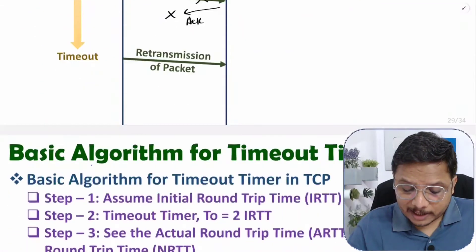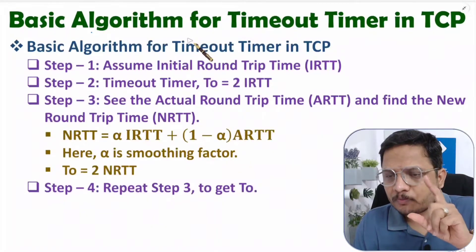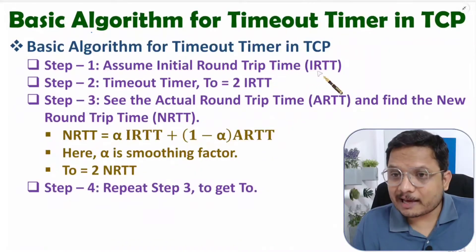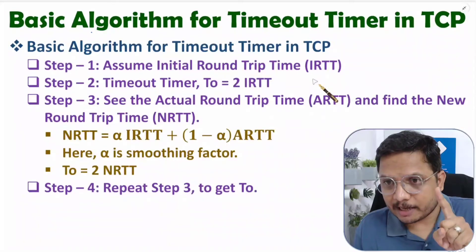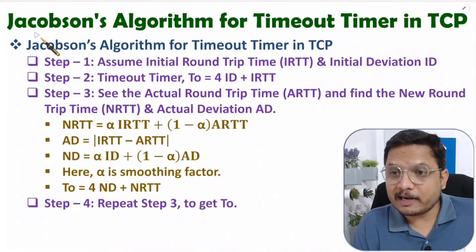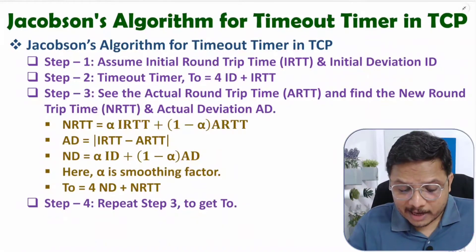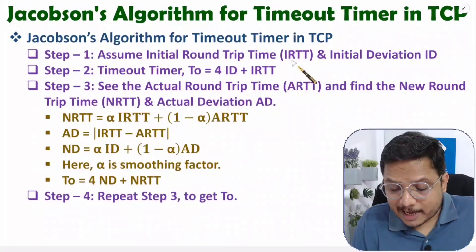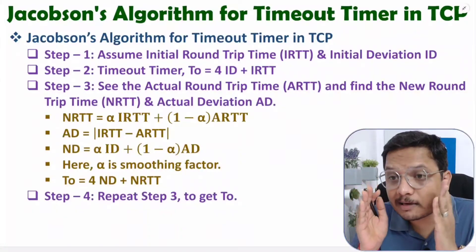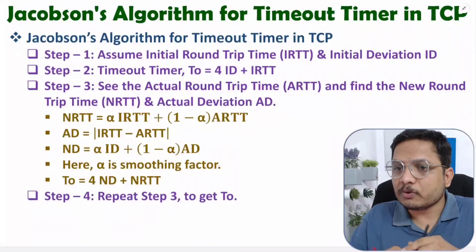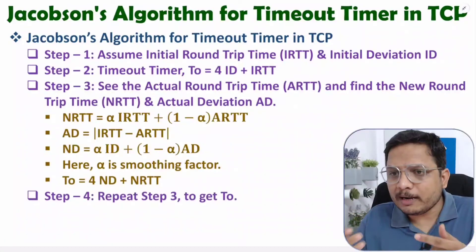That is how it should be dynamic, and it can be dynamic based on an algorithm. The basic algorithm I explained in my last video had one issue: we were estimating the value of IRTT as a point estimation, meaning a fixed value. But Jacobson identified that estimation should not be a point estimate — it should be a range estimate. So what he did is estimate IRTT along with deviation, making it a range estimation, which improves the estimation of the timeout timer.